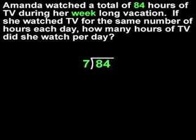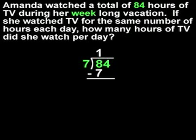7 divides into 8 one time, so we put a 1 above the 8. 1 times 7 is 7, so we put 7 under 8 and subtract 8 minus 7 to get 1. Now we bring down the 4.